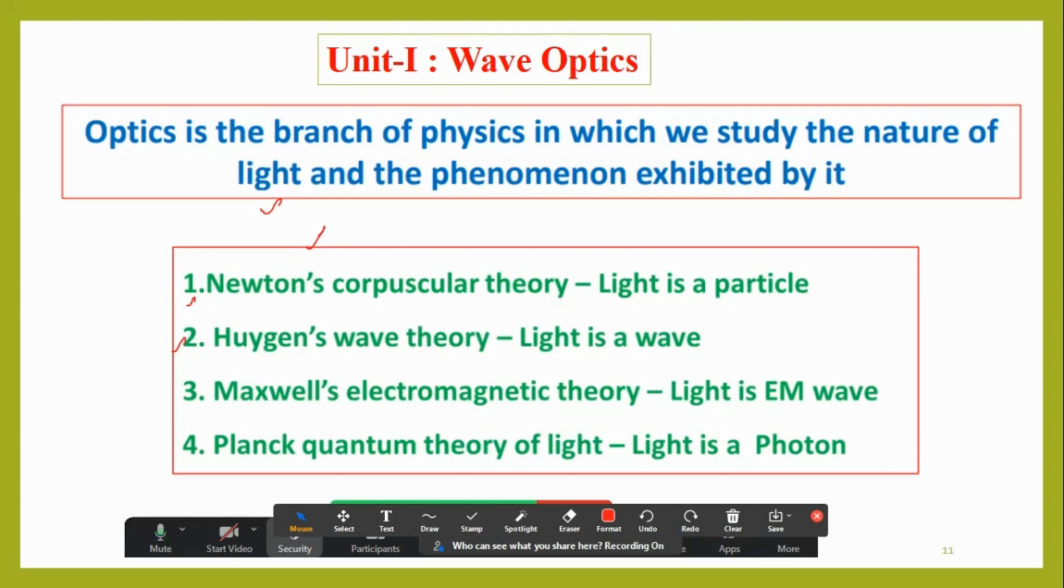Further in the 1900s, when Planck introduced quantum theory, light was treated as a photon. Further, de Broglie showed that all matter in nature has a dual nature. So now what we can treat is light is a photon and it has a dual nature.